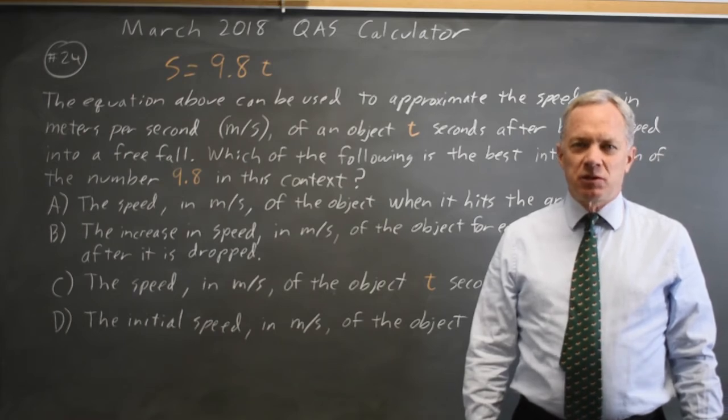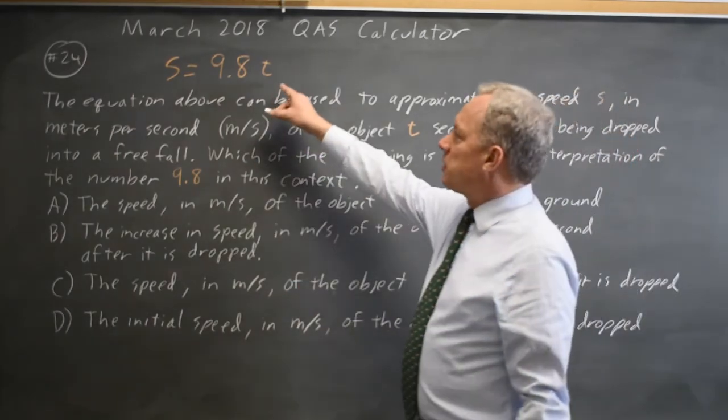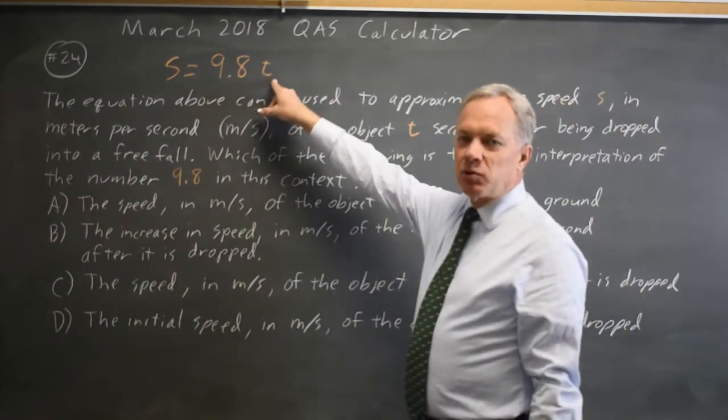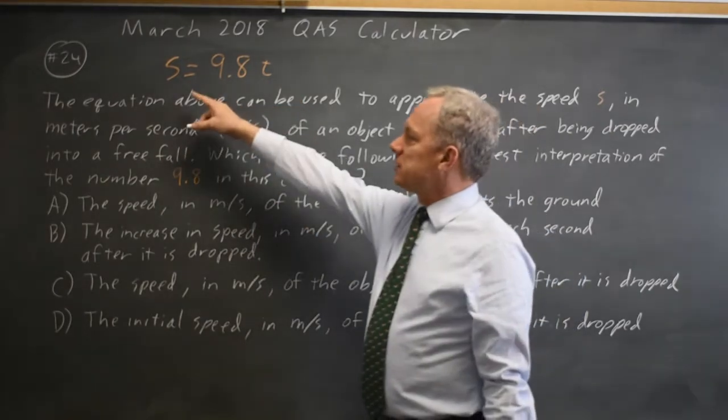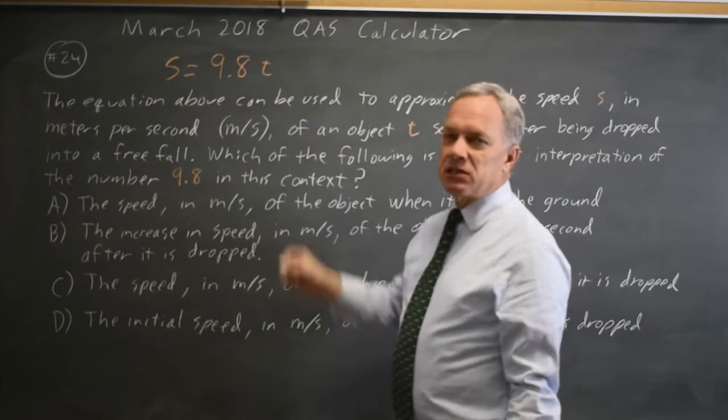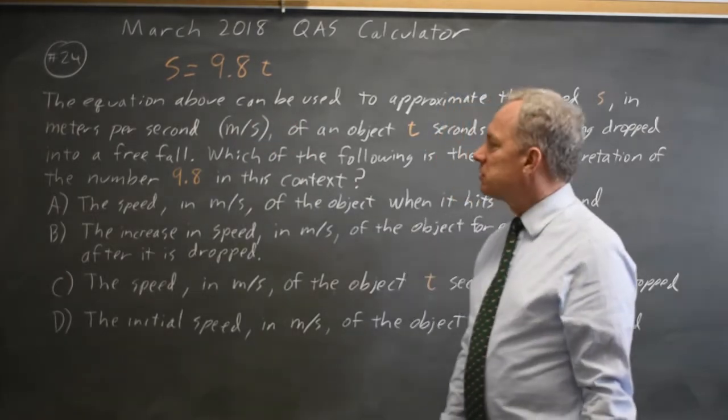This is question 24. The College Board gives us a linear equation and asks for an interpretation of 9.8 in context, where this equation gives the speed s in meters per second at time t seconds after the object is released.